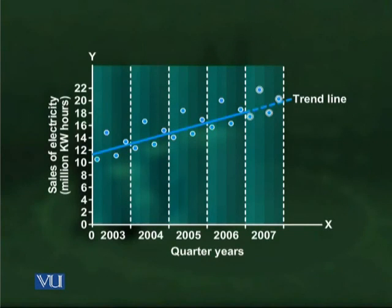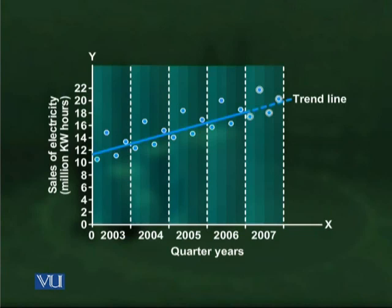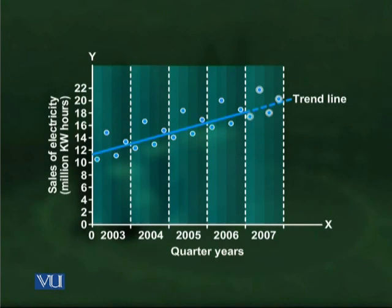Using the same procedure for all remaining quarters of 1996, the seasonally adjusted forecasts are: 22.12 for Q2, 17.59 for Q3, and 20.60 for Q4. These seasonally adjusted data points are shown on the graph as encircled dots — two lying below the trend line (Q1 and Q3) and two lying above (Q2 and Q4), replicating the seasonal pattern from the actual data.